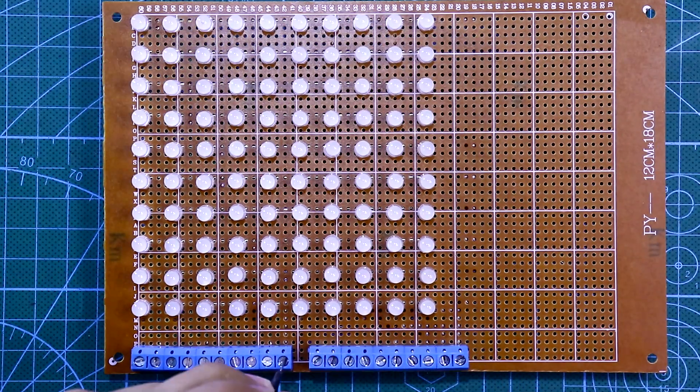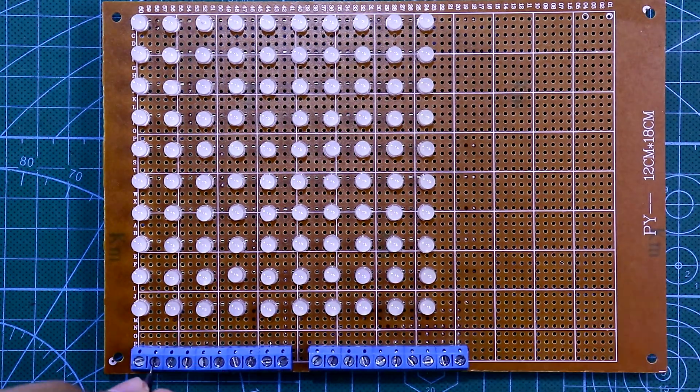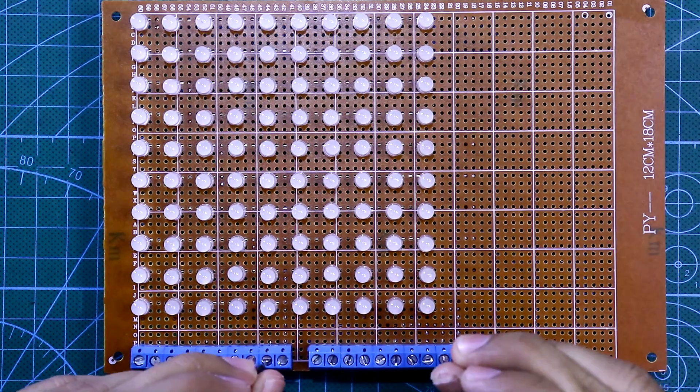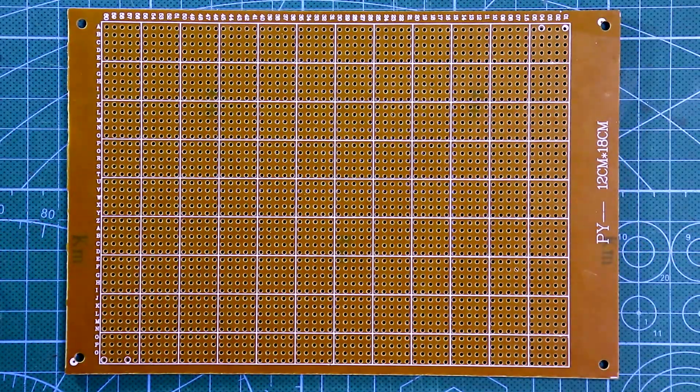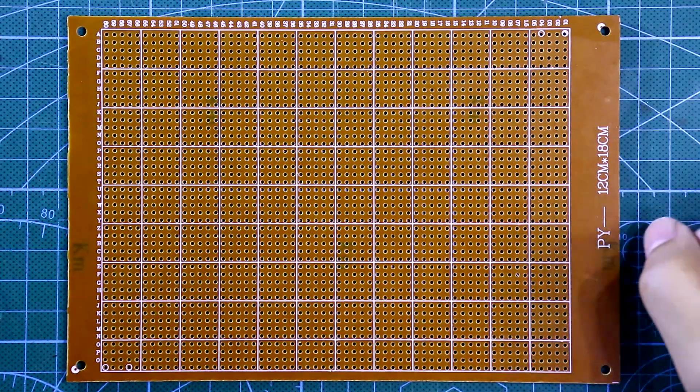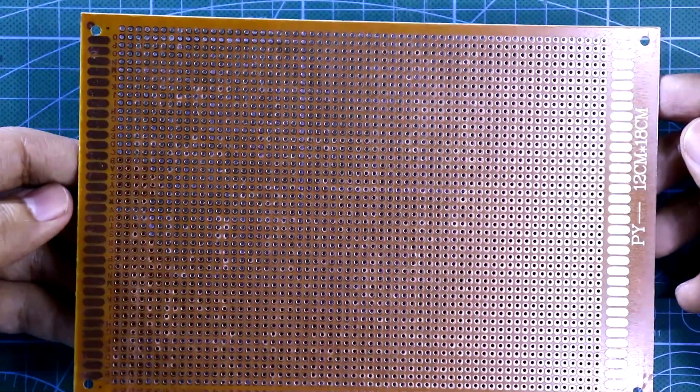In this video I'm going to show you how to make a 10 by 10 LED matrix. Let's get started. For this you have to take a 12 by 18 centimeter PCB board.